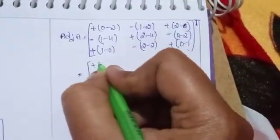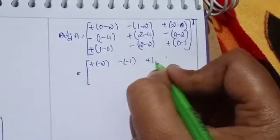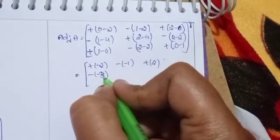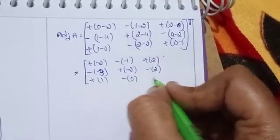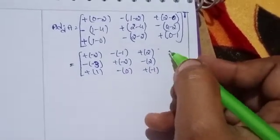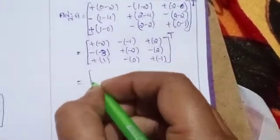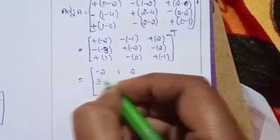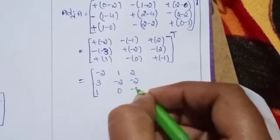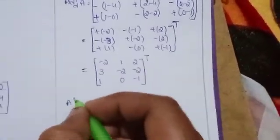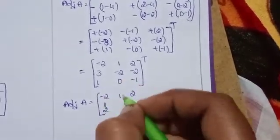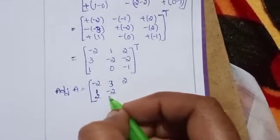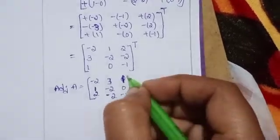Evaluating the cofactors: minus 2, plus 1, plus 2; plus 3, minus 2, minus 2; plus 1, 0, minus 1. Taking the transpose (row to column), adjoint A equals: minus 2, 3, 1; 1, minus 2, 0; 2, minus 2, minus 1.